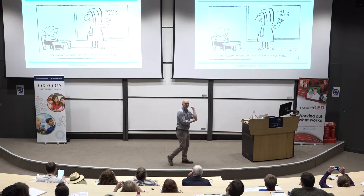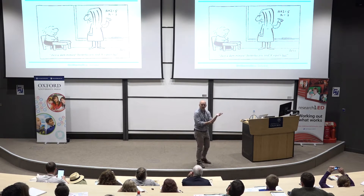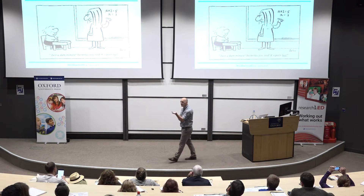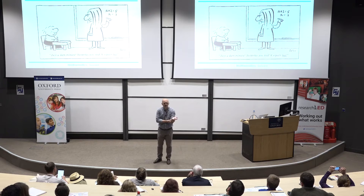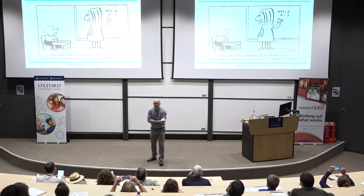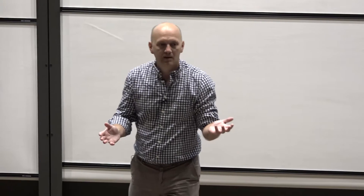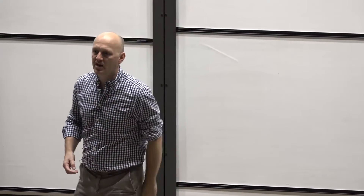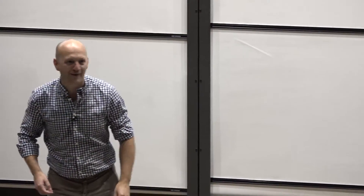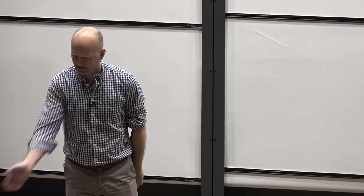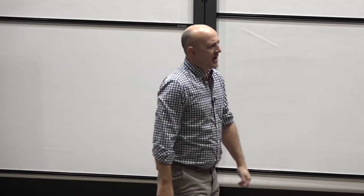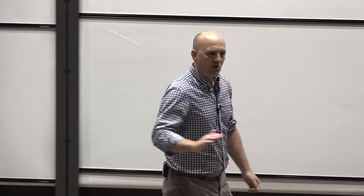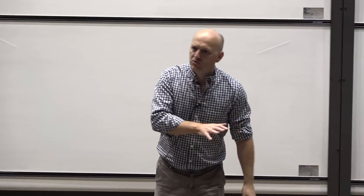In Year 1, we say to children, what's 5 take away 2? It's 3. And a kid will say, what's 2 take away 5, sir? And miss will say, it can't be done. And then in Year 2, you say, what's 2 take away 5? And the kid will go, it can't be done. Of course it can be done, you idiots. And you do this all the way through school.